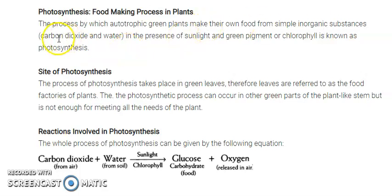Those inorganic substances are carbon dioxide and water. Now, let us see from where plants get carbon dioxide and water. Carbon dioxide is present in the atmosphere. As we discussed in class 6, the atmosphere contains 78% nitrogen, 21% oxygen, and the remaining 1% includes various gases including carbon dioxide. So the plant absorbs carbon dioxide from the atmosphere or air, and since the plant is in the ground, it absorbs water and minerals from the soil.